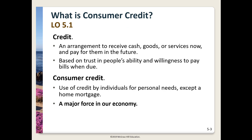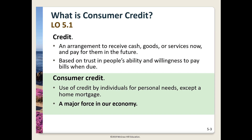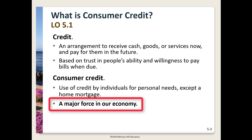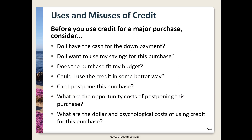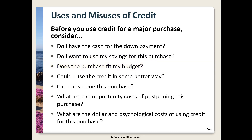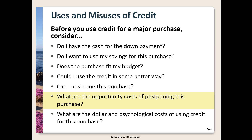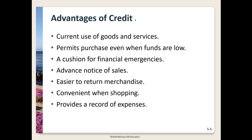Before we look at advantages and disadvantages, we need to be clear on definitions. Credit is an arrangement to receive cash, goods, or services now and pay for them later. Consumer credit refers to the use of credit by individuals, excluding home mortgages. Before you plunge into using credit, consider: can you make the down payment? Does the purchase fit in your budget? Could credit be used in a better way? What are the trade-offs of now versus later, including dollar and psychological costs?